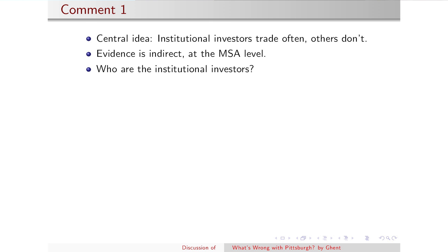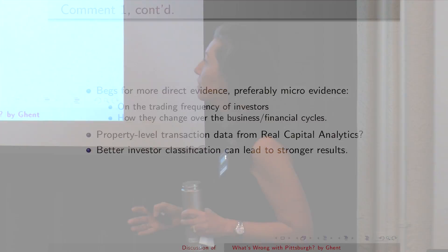It would be really nice to have some micro evidence of who are these institutional investors. I think the paper is really begging for more direct evidence on the trading frequency of investors and also how they change their trading frequency over the cycles, over the business cycle, over the financial cycle.